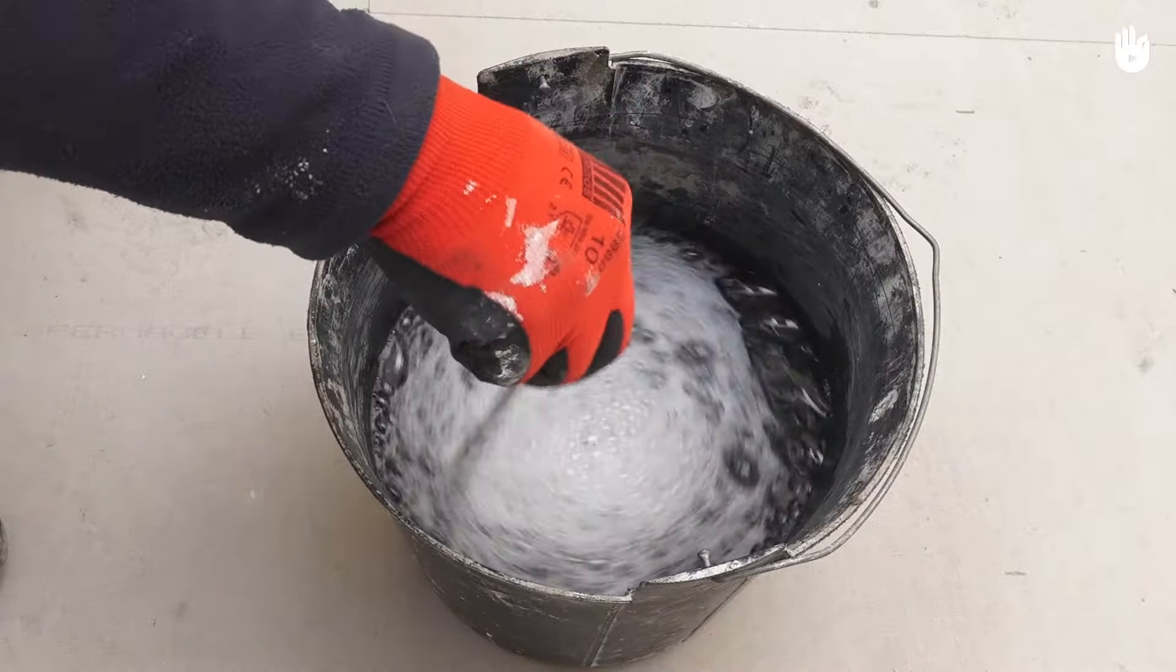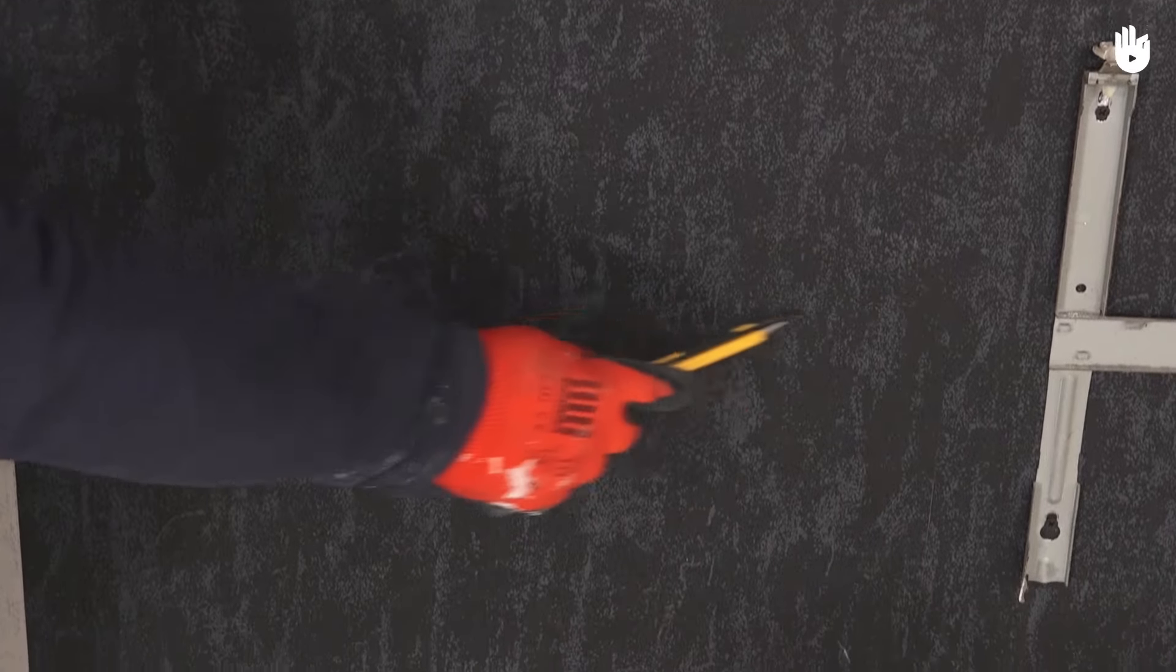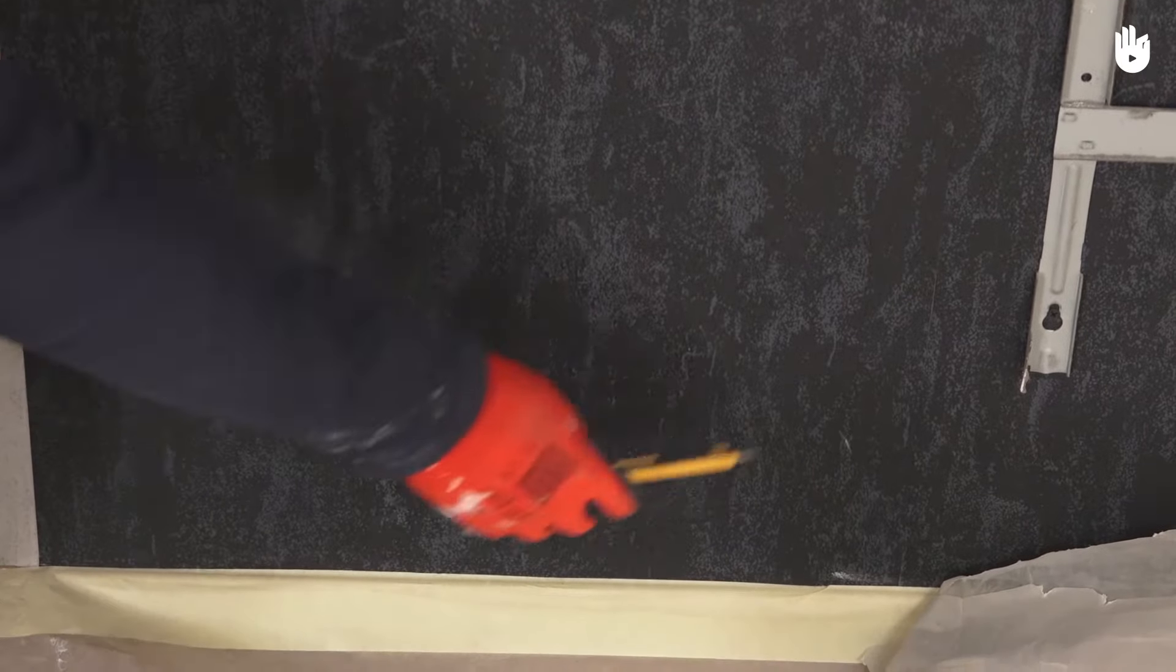The technique consists of thoroughly wetting the sponge's surface. For wallpaper that is somewhat plasticized or rather thick, such as this one, slash the surface with the tip of a Stanley knife or a metal brush, so that the product can soak in fully.